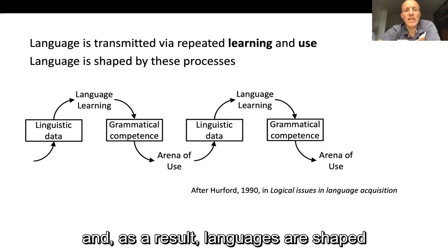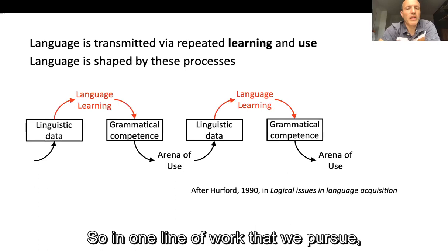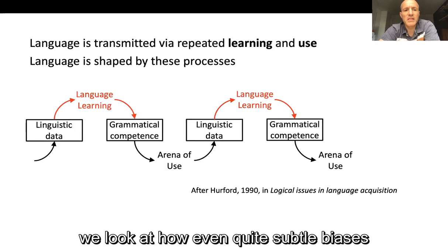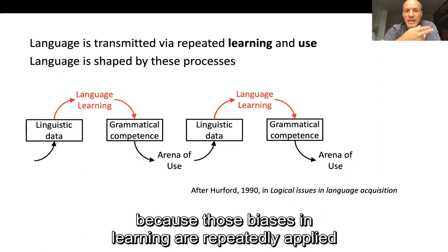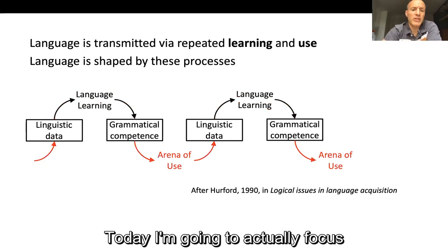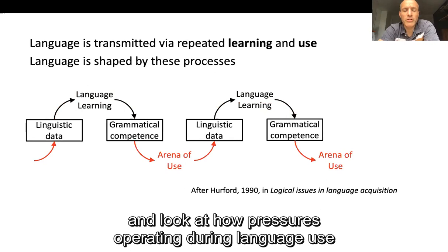In one line of work we pursue, we look at how even quite subtle biases in language learning can shape linguistic systems, because those biases are repeatedly applied as languages are transmitted through this process. Today I'm going to focus on the other side of this spiral and look at how pressures operating during language use can shape the structure of linguistic systems.